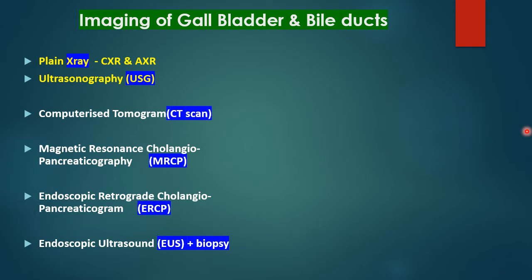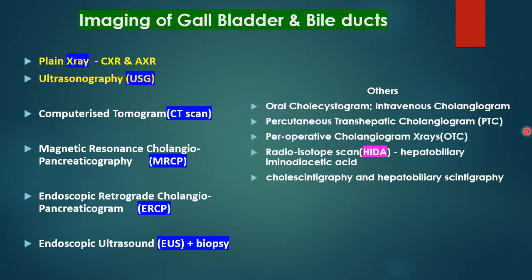Other investigations include a radioisotope scan known as the HIDA scan — hepatobiliary iminodiacetic acid scan — which is occasionally required in children and newborns for diagnosis of biliary atresia or choledochal cysts. Most other older investigations are no longer commonly used.